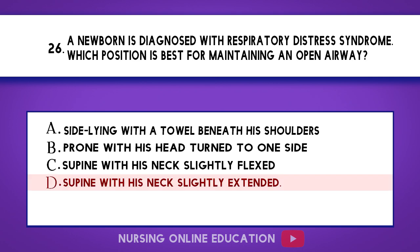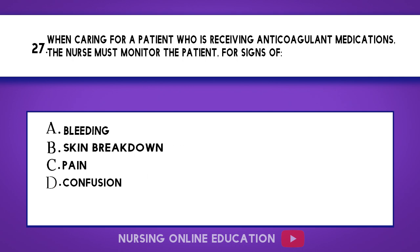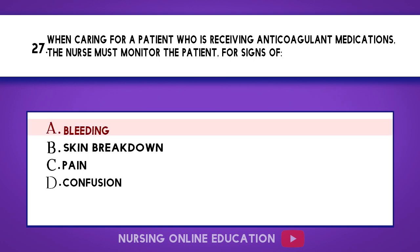Question 27. When caring for a patient who is receiving anticoagulant medications, the nurse must monitor the patient for signs of: A. Bleeding. B. Skin breakdown. C. Pain. D. Confusion. The answer is option A: Bleeding.